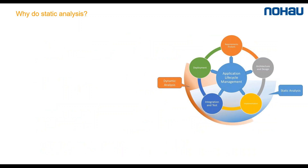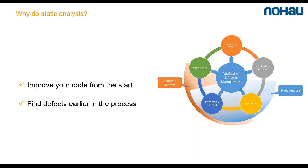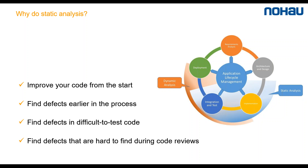So why do static analysis? As you can see, the blue area shows where in the process you can apply static analysis compared to dynamic analysis, which is shown in orange. When you do static analysis you don't have to be able to execute your code. There are mainly four reasons to use static analysis: you can use it from the start — if you compile the code you can start testing it; you can find errors at a very early stage; you can find errors in code that is hard and costly to test; and it's an excellent complement to manual, time-consuming code reviews.